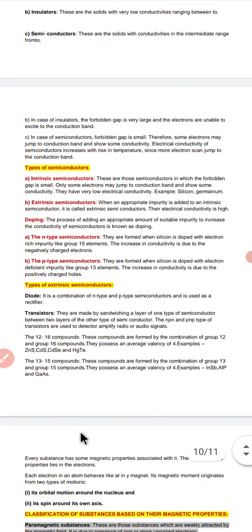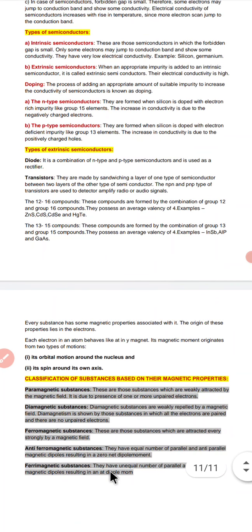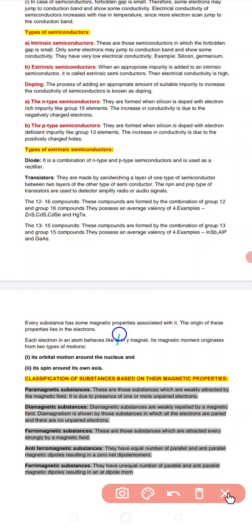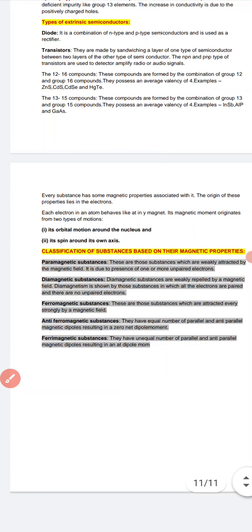Every substance has certain magnetic properties associated with it, arising from two motions: its orbital motion around the nucleus and its spin around its own axis. Based on magnetic behavior, the compounds are classified into: paramagnetic, diamagnetic, ferromagnetic, anti-ferromagnetic, and ferrimagnetic.